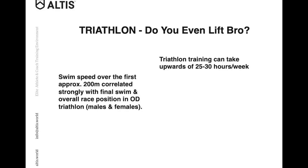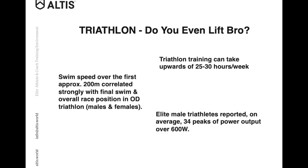We know that swim speed over the first approximately 200 meters correlates strongly with the final swim and overall race position in Olympic distance triathlon for both males and females. We know that elite male triathletes report on average 34 peaks of power output over 600 watts, which is quite extreme. And there are going to be high-intensity transitions and sprint finishes, even though the long duration of these events may not seem like that's going to be necessary — it is not uncommon for it to come down to a sprint finish.